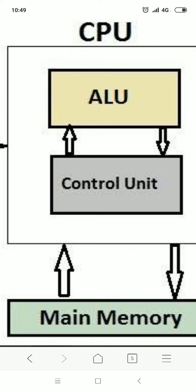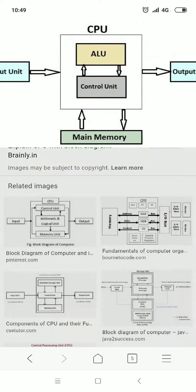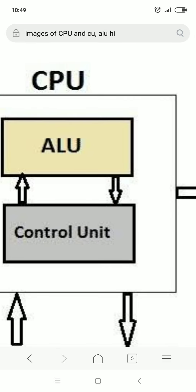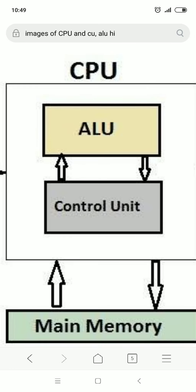चौथा function है dragging. Dragging का use drawing के लिए होता है, या किसी object को एक place से दूसरे place पर ले जाने के लिए. Drag करने के लिए mouse pointer को उस object पर लेकर जाओ, left button को press करो और बिना release किए उसको move करो — जब वो अपनी position पर आ जाए then release it. That is dragging.